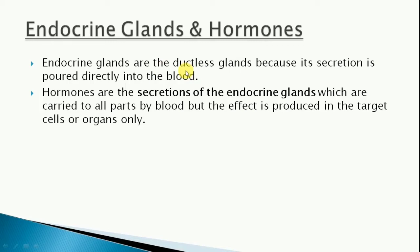Endocrine glands are called ductless glands. Ductless glands means that endocrine glands secrete their secretion directly into the blood. They do not need any special duct - a duct is a tube-like structure. So they do not need any special tube-like structure for secretion because they pour their secretion, which refers to hormones, directly into the blood.